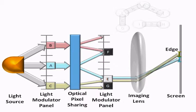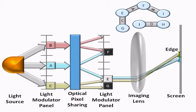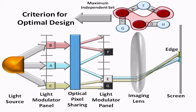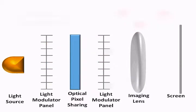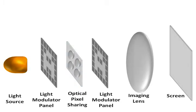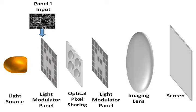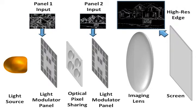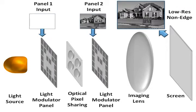We model these conflicts using a graph and show that the optimal set of edge pixels can be found by computing a weighted maximum independent set in this graph. This helps us define a criterion for an optimal optical design to minimize such conflicts and maximize the visual quality. Interestingly, a simple optical design based on a grid of lenses can satisfy these optimality criteria. Here we show an example of the inputs to the first and second light modulator panels that create the high-resolution edge image and the low-resolution non-edge image. Together, these two create the edge-enhanced image.